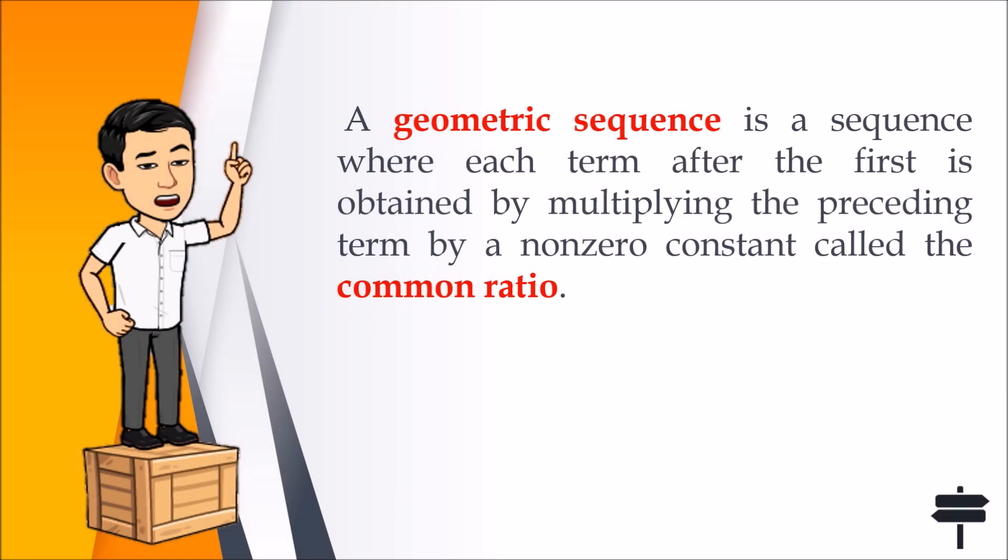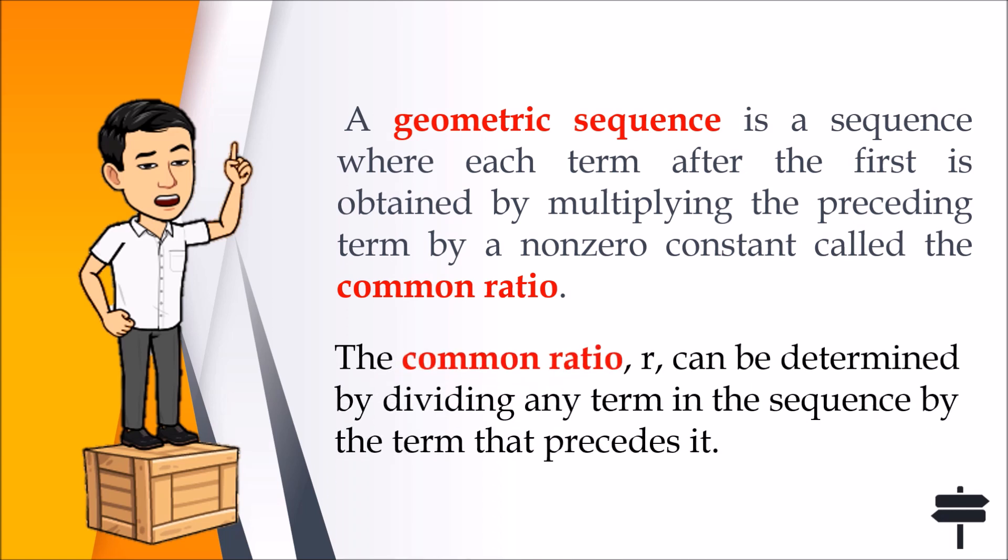A geometric sequence is a sequence where each term after the first is obtained by multiplying the preceding term by a non-zero constant called the common ratio. The common ratio, or r, can be determined by dividing any term in the sequence by the number that precedes it.